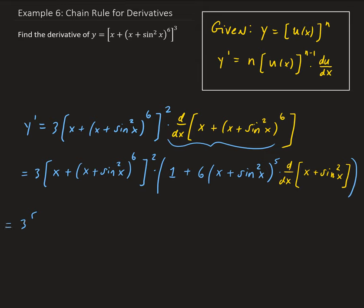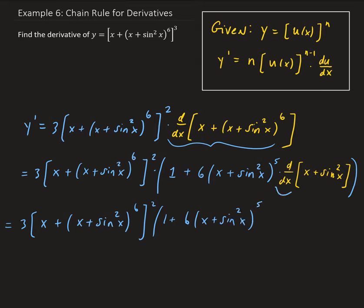So we have 3 times (x plus (x plus sine squared x) to the fifth). We're going to take the derivative of this part. The derivative of x is just 1, so we have 1 plus 2 times sine x, times the derivative of sine x.